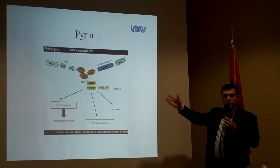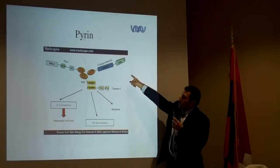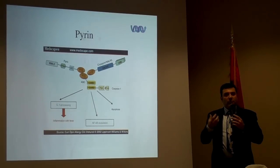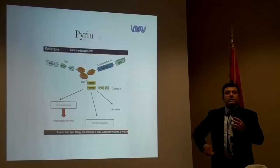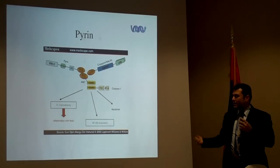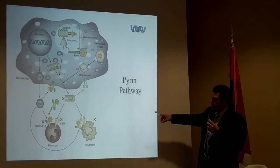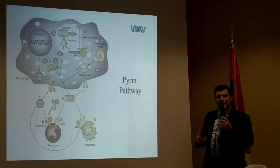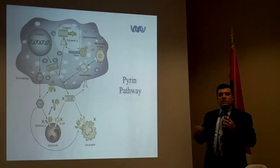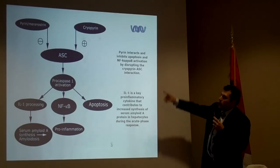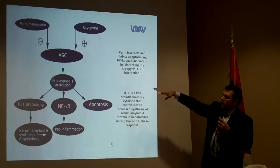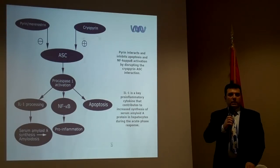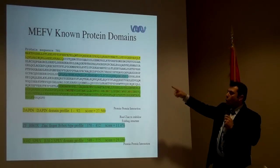The pyrin protein is the product of MEFV. Cryopyrin and caspases create inflammation, and pyrin controls it. If pyrin is mutated and cannot do its job, inflammation keeps going and creates all the FMF symptoms. Pyrin blocks the caspase system, acting as a negative feedback mechanism — like a thermostat that stops excess inflammation. If pyrin is mutated and cryopyrin starts inflammation, the control mechanism fails.